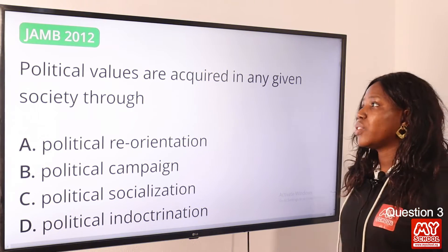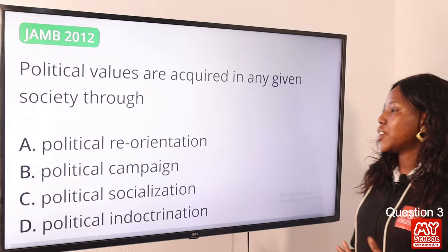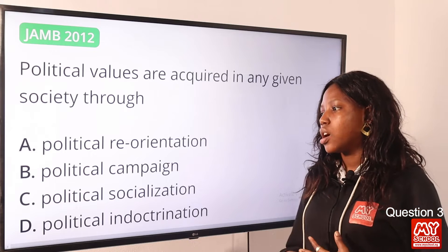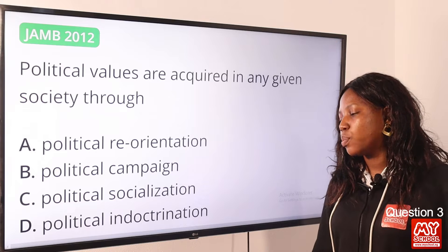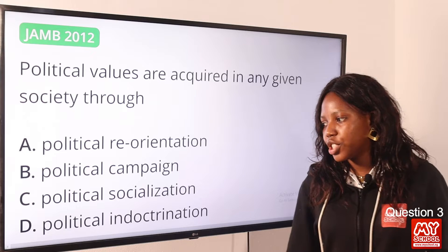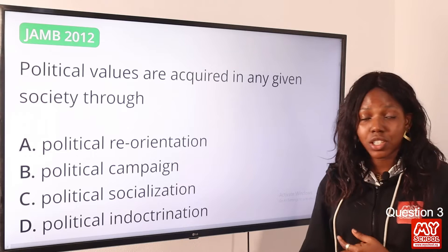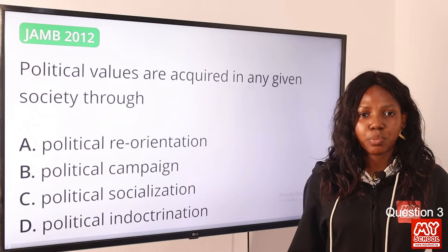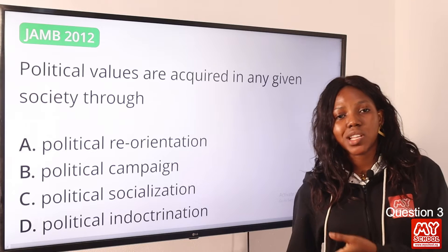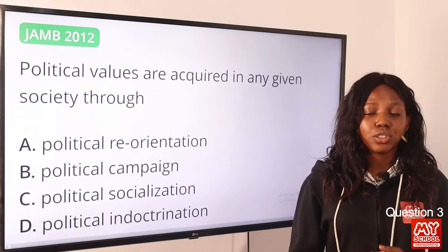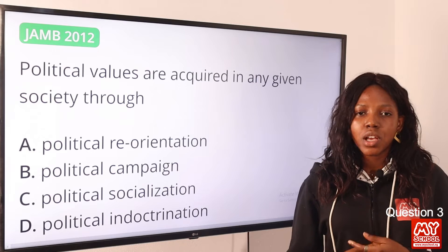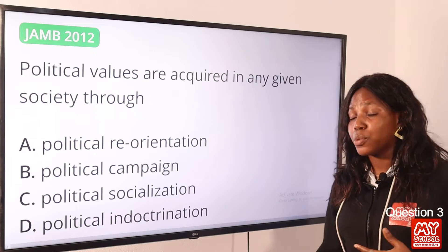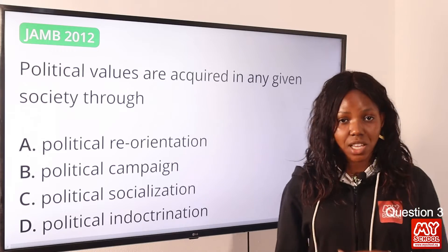Question 3: Political values are acquired in any given society through — option A: political reorientation; option B: political campaign; option C: political socialization; option D: political indoctrination. The answer is political socialization. Political socialization is a process of acquiring political attitudes, values, and norms, which shapes a citizen's political behavior. So the answer remains option C.